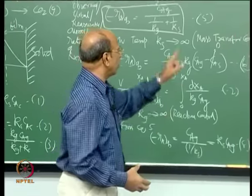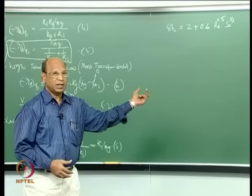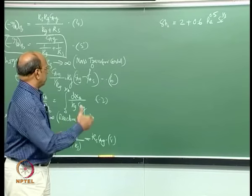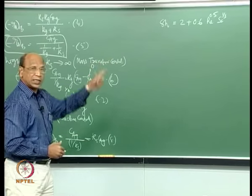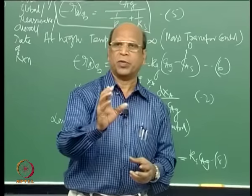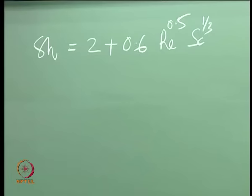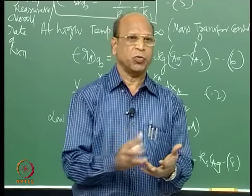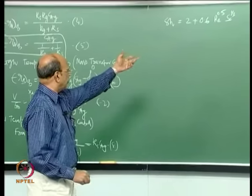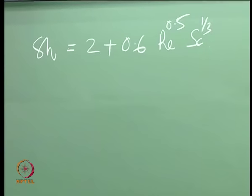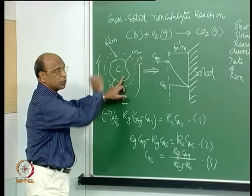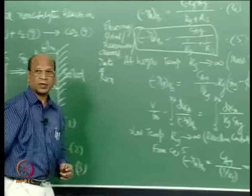For a single particle this is the simplest equation in chemical engineering. In reality you never have a single particle, and for multi-particle systems — packed beds, fluidized beds, moving beds, rotating drums — developing mass transfer equations is not easy. All these correlations are expressed only in terms of Sherwood number, Reynolds number, and Schmidt number. The functional relationship must be found through experiments.